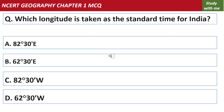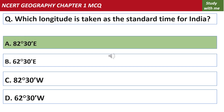Which longitude is taken as the standard time for India? The answer is 82 degrees 30 minutes east, passing through Mirzapur in Uttar Pradesh.